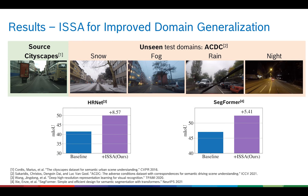To verify the effectiveness of ESA, we experiment with Cityscapes to ACDC generalization. ACDC covers four different unseen weather conditions. By employing ESA, we improve the baseline by a large margin, using both CNN and transformer-based semantic segmentation networks, such as HRNet and Segformer.